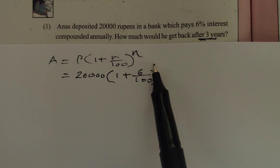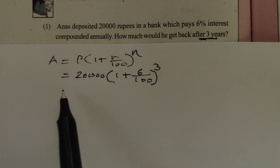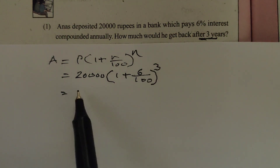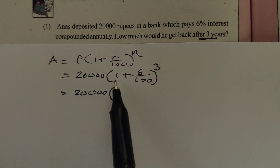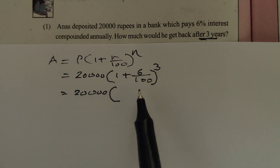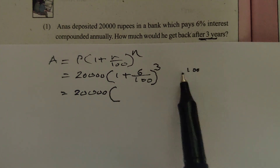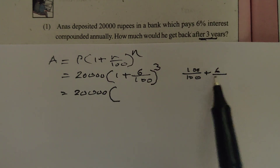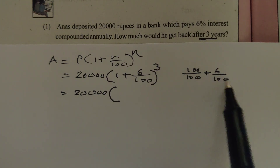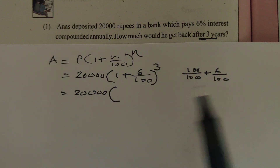N is the number of years, which is 3. The calculation proceeds: 20,000 into 1 plus 6 by 100. Since 1 is 100 by 100 and the denominator is the same, adding 6 by 100 gives 106 by 100.